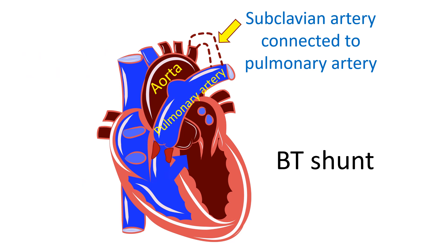BT shunt is a temporary procedure for the small baby not fit for a major operation to totally correct the combination of birth defects in tetralogy of Fallot. When the baby is better, total correction is done by open heart surgery. In selected cases, total correction can be done as the first procedure without going for a BT shunt in advanced centres. Hence the number of BT shunts for tetralogy of Fallot has come down.